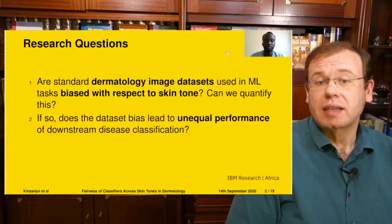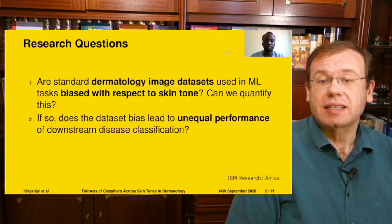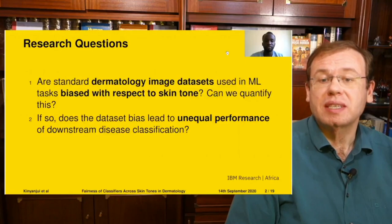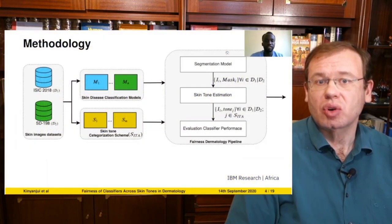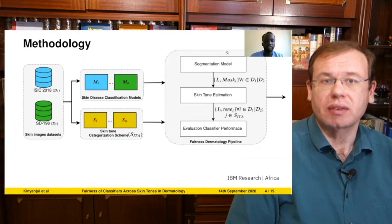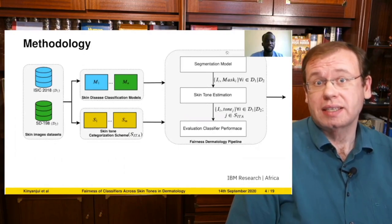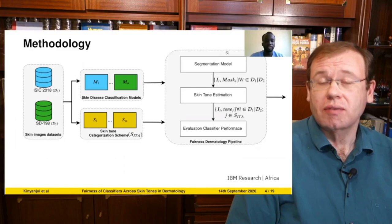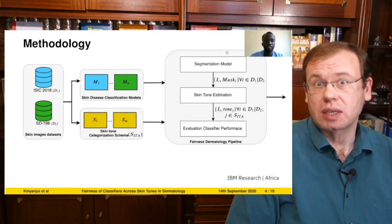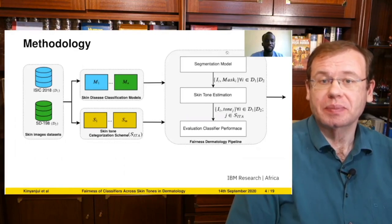The questions were: are standard dermatology image datasets used in machine learning tasks biased with respect to skin tone, and are they able to quantify this? And if so, does the dataset bias lead to unequal performance in downstream disease classification? They took databases, inspected them with respect to skin tone, trained models, and looked at performance to identify bias. The results are quite surprising — this is very good evidence that we really have to think about building machine learning models that can handle bias emerging from skin tone.